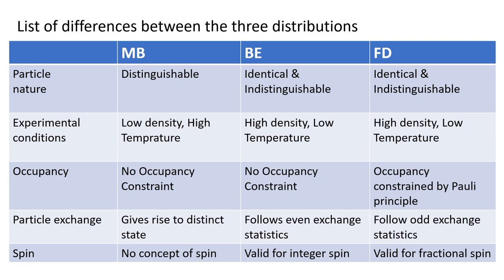Of course in BE they are also identical. Regarding experimental conditions: we get MB statistics at low density of particles or high temperature or both. In BE we have high density of particles and low temperature, and similarly FD statistics would be valid for fermions at high density and low temperature.